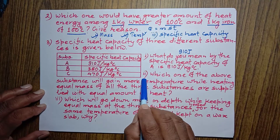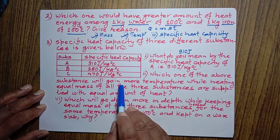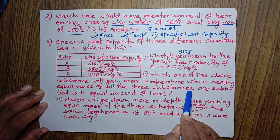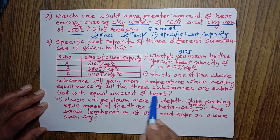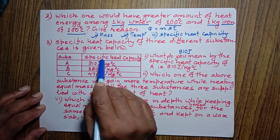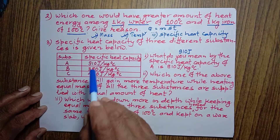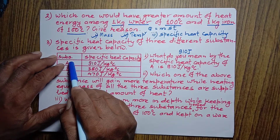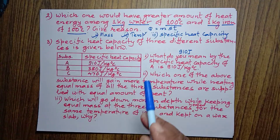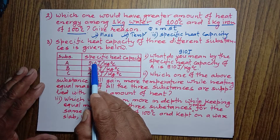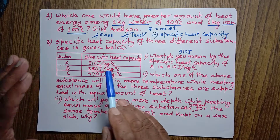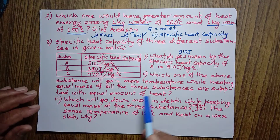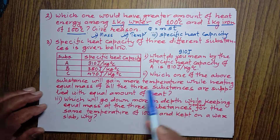Now let's talk about the second sub-question: which one of the above substances will gain more temperature while heating, if equal mass of all three substances are supplied with equal amounts of heat? If all of them are heated, all of them have equal mass — say 1 kg of A, 1 kg of B, and 1 kg of C — and equal amounts of heat are supplied, then which one will gain more temperature?